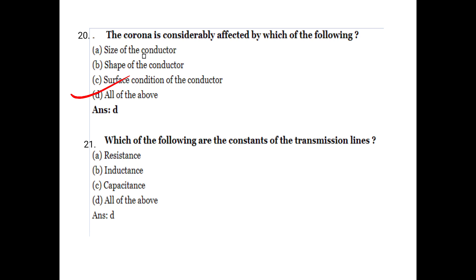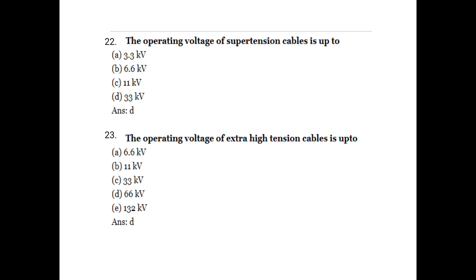Second question: Which of the following are the constants of transmission lines? The constants are resistance, inductance, and capacitance — all of the above. The operating voltage of super-tension cables is up to 33 KV.